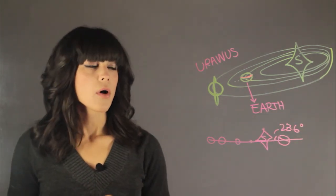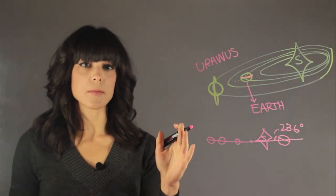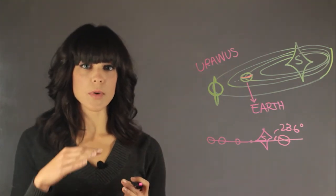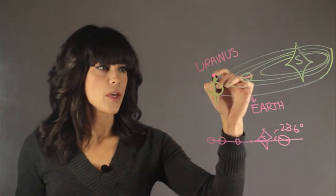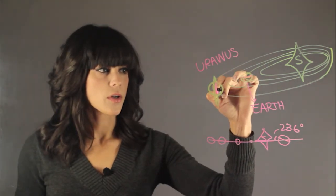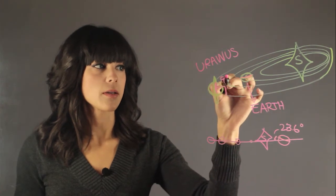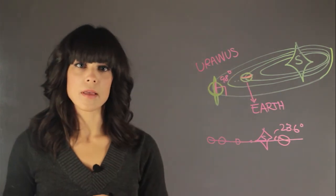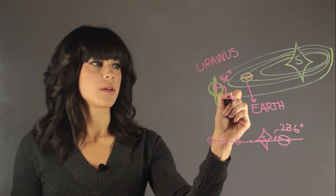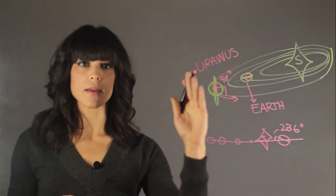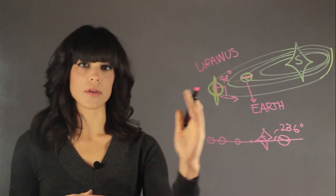Now Uranus is actually tilted by 98 degrees, so it's practically on its side. So the equator, which is over here, is 98 degrees from that orbital plane. That means that as it orbits the Sun, it is rolling on its side all throughout the year.